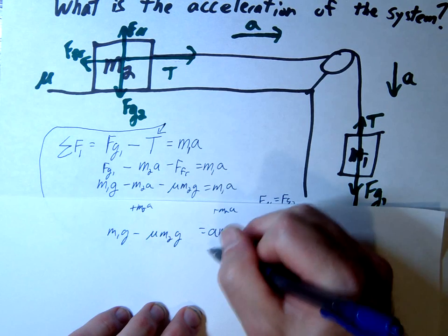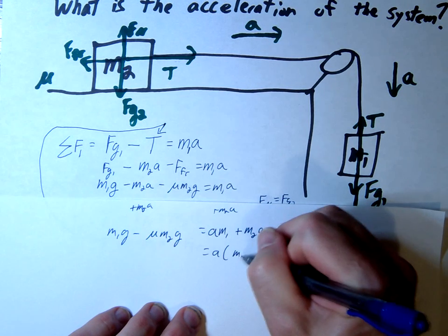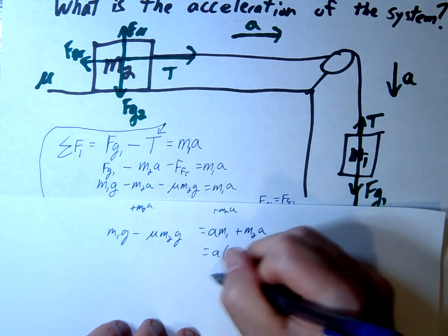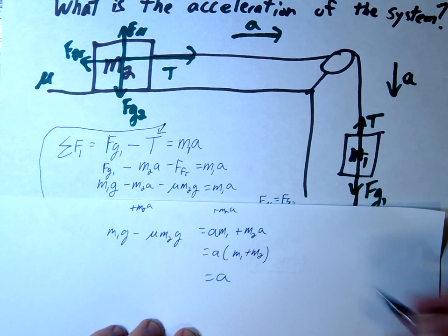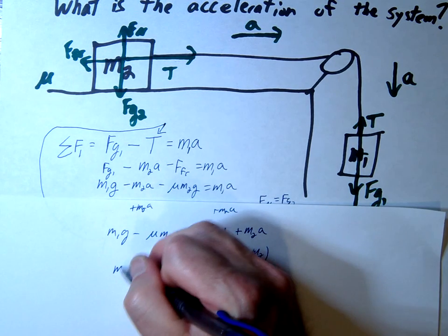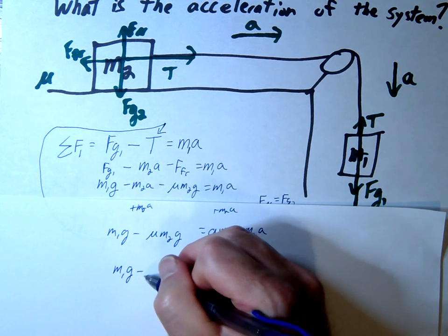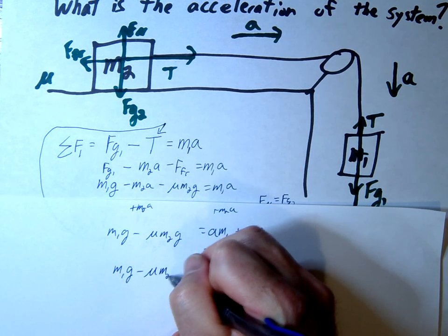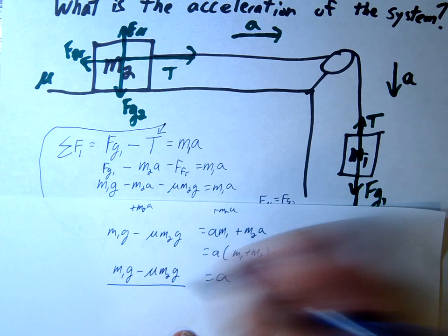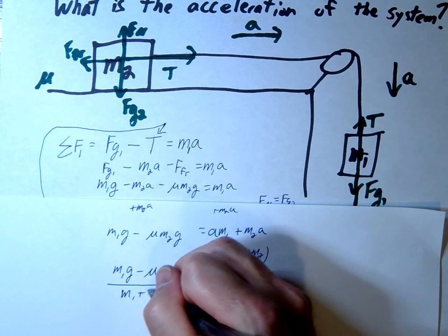Factor out the a to get a times (m1 plus m2). Dividing by that sum gives us a equals (m1g minus mu times m2g) divided by (m1 plus m2).